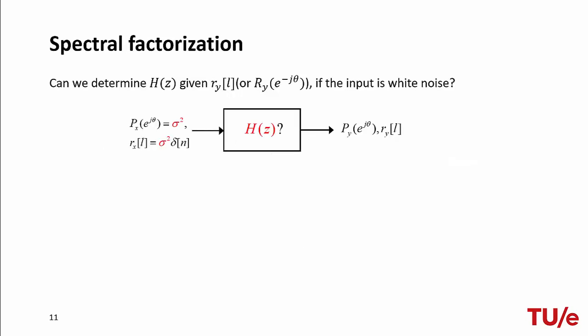After having explained its motivation, we can pose the spectral factorization problem as the answer to the following question. If we know the second-order statistics of a random signal, that is either its autocorrelation or the power spectral density, and we know that this signal Y has been obtained as the output of an LTI driven by white noise, can we then determine the impulse response or equivalently the transfer function of the system and the variance of the input noise?